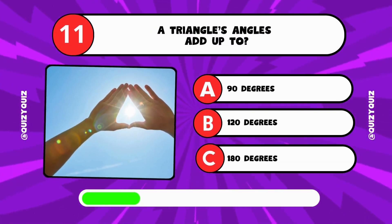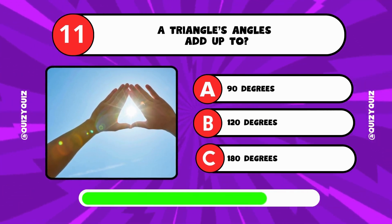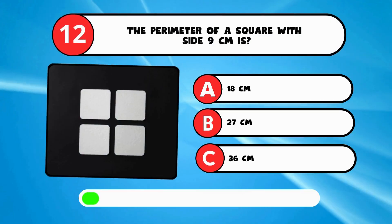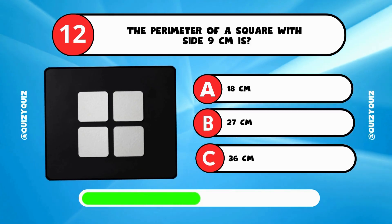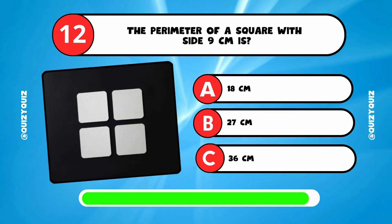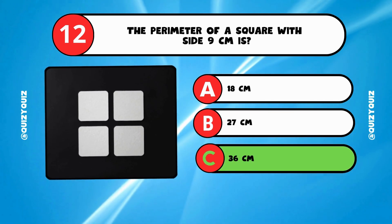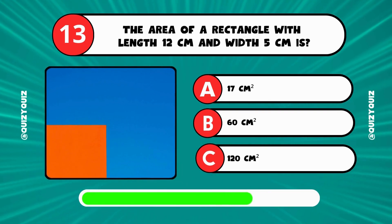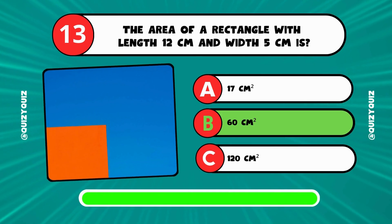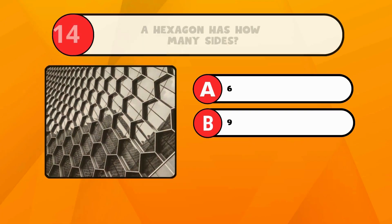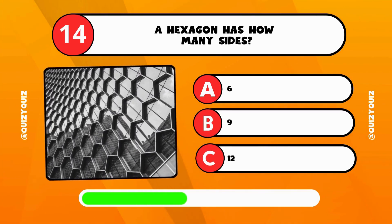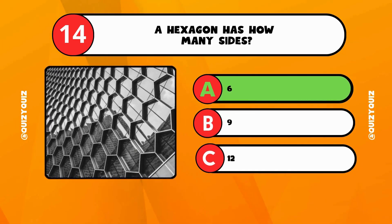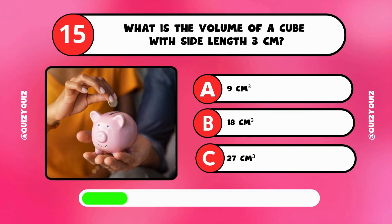A triangle's angles add up to 90, 120, or 180 degrees. The perimeter of a square with side 9 centimeters is? The area of a rectangle with length 12 centimeters and width 5 centimeters is? A hexagon has how many sides? What is the volume of a cube with side length 3 centimeters?